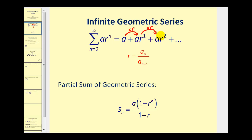For example, if we took the third term, a r squared, and divided by the term before it, a r to the first, this simplifies to r. And this will be true for any two consecutive terms.